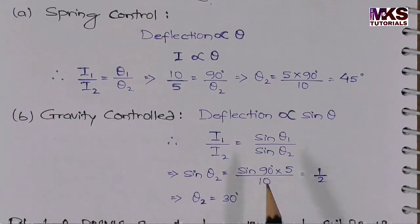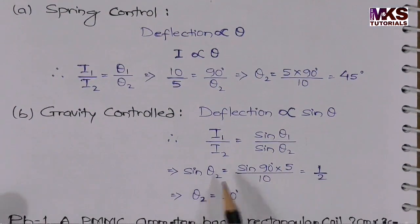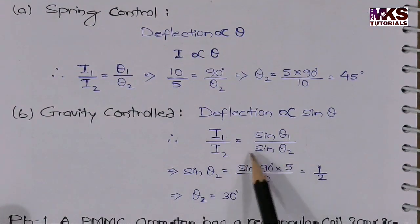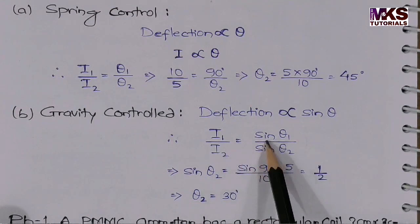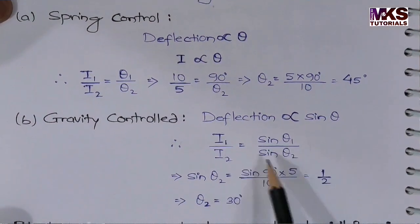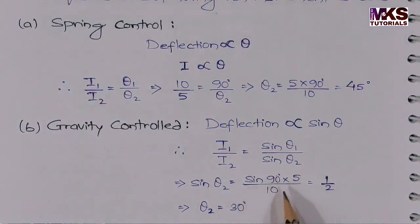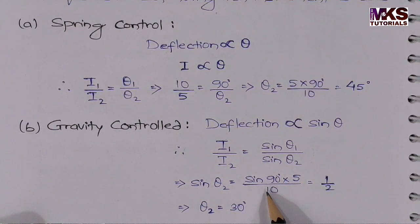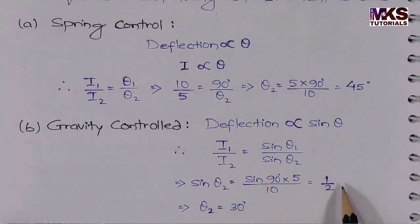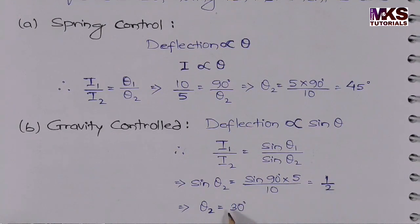For gravity control: sin θ₂ = sin θ₁ × (I₂/I₁). Here θ₁ = 90 degrees, so sin 90° = 1. Substituting: sin θ₂ = 1 × (5/10) = 1/2. Therefore θ₂ = sin⁻¹(1/2) = 30 degrees.